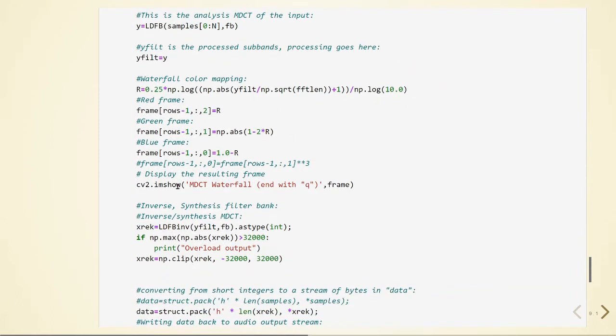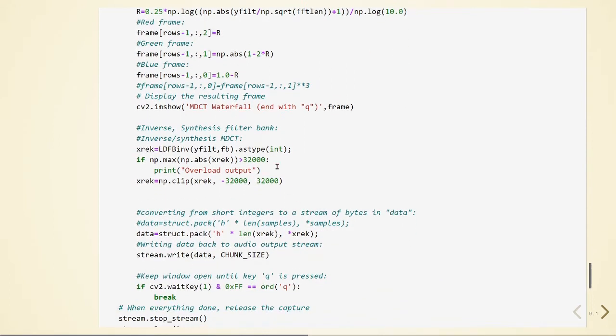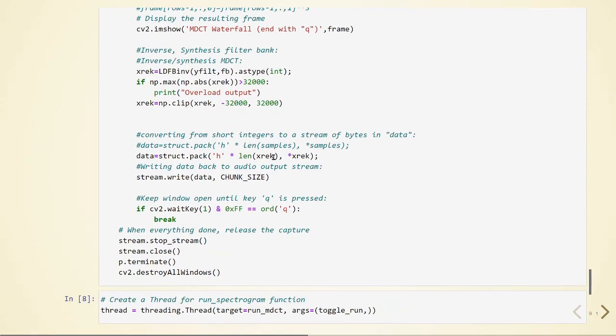These are the filter bank coefficients that we defined earlier and this is the analysis. The output is the result of this function here. Then we have the color mapping for our waterfall spectrogram. Here we are doing the reconstruction, we take the low delay filter bank inverse. And then we are writing this data to the audio card and we can listen to it.